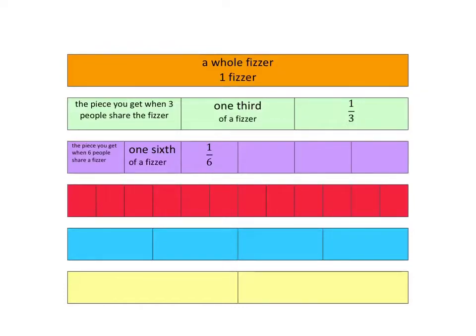This is the name that we give to the piece. In that name there's clues about what the piece looks like. It tells us we've taken our fizzer and we've cut it into six pieces and we've just got one of those six pieces.